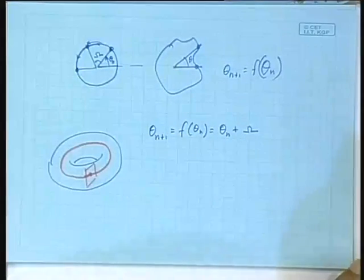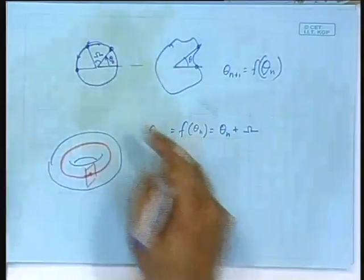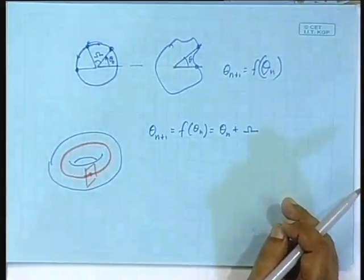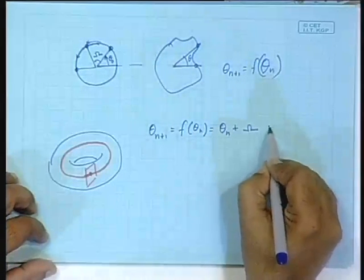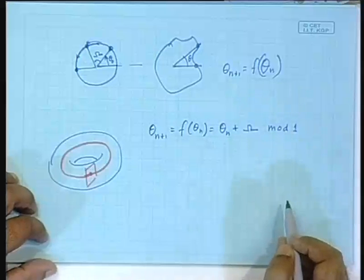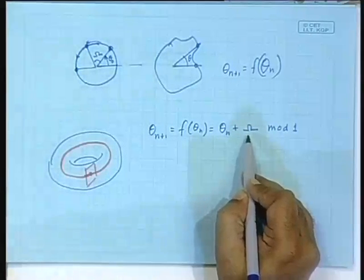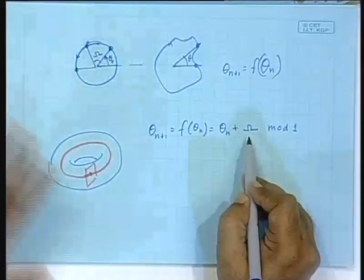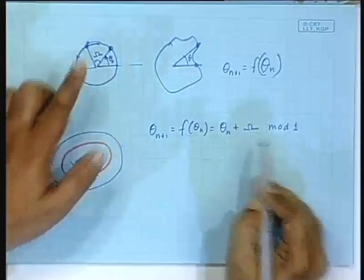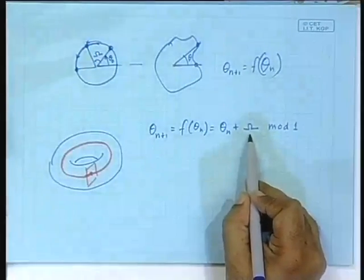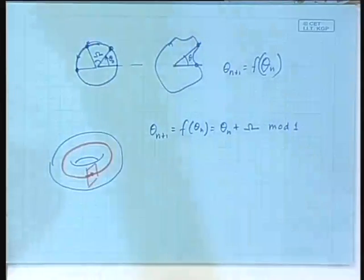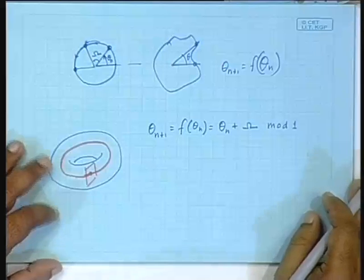The map is: θ_{n+1} = θ_n + Ω (mod 1). It is the same as the earlier system. It has been normalized so that the full circle is 1, so going around the whole circle is 1. This should actually be written as mod 1, because if ω is greater than 1, it really makes no sense — as far as the Poincaré section is concerned, it will turn only by the remainder part. So if ω is 1.1, it will turn by 0.1.